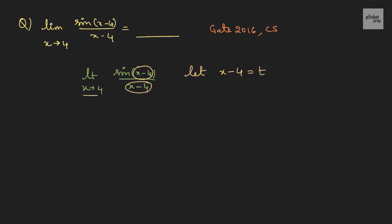And here they mention that x is 4. So, when x is 4 what will be the value of t. If x is 4 and you substitute the 4 in this equation you will get it as 4 minus 4 is 0. So, t is 0. So, I can rewrite this equation as limit t tends to 0, sin t by t. Just now we have learned limit x tends to 0, sin x by x is 1. Therefore, this value is 1. The answer is 1.